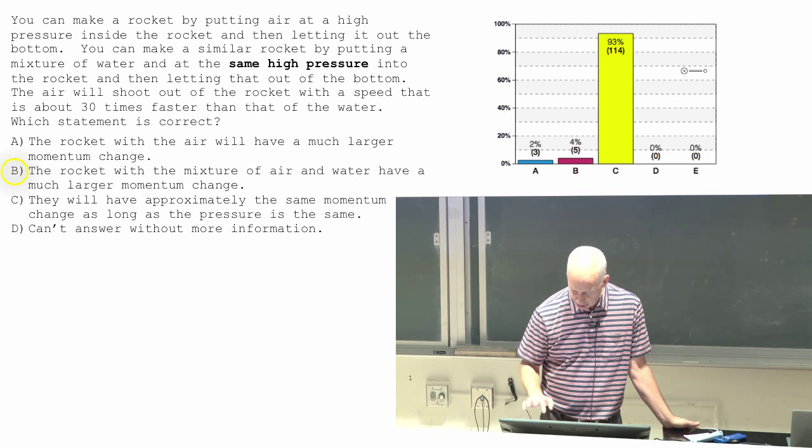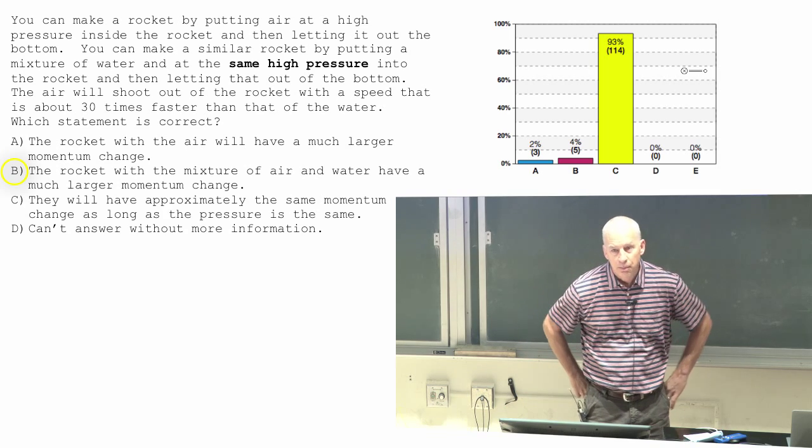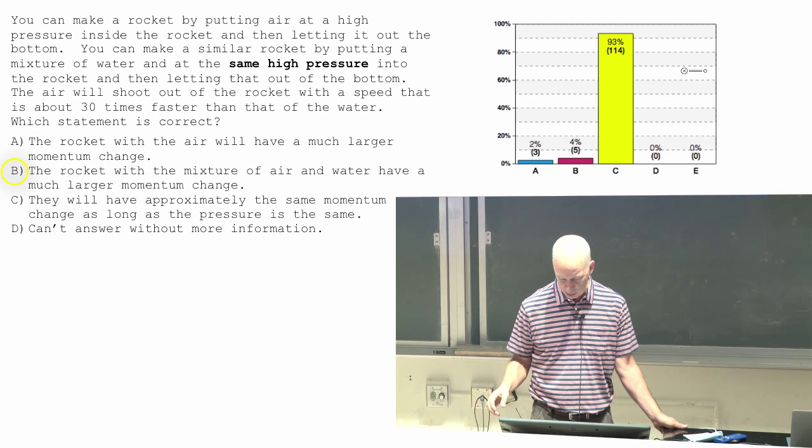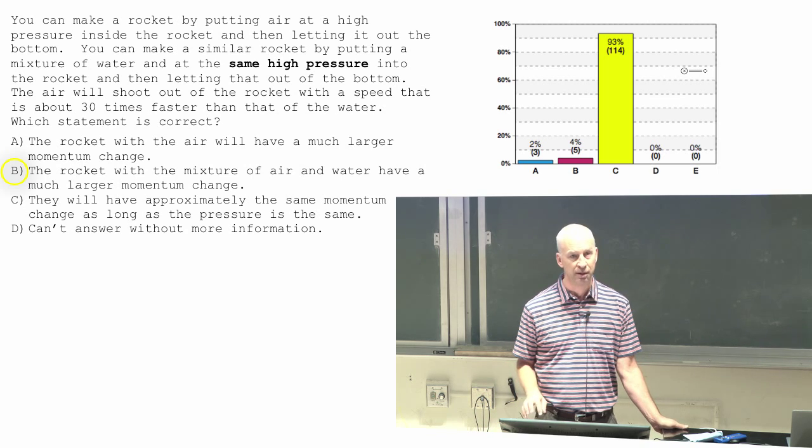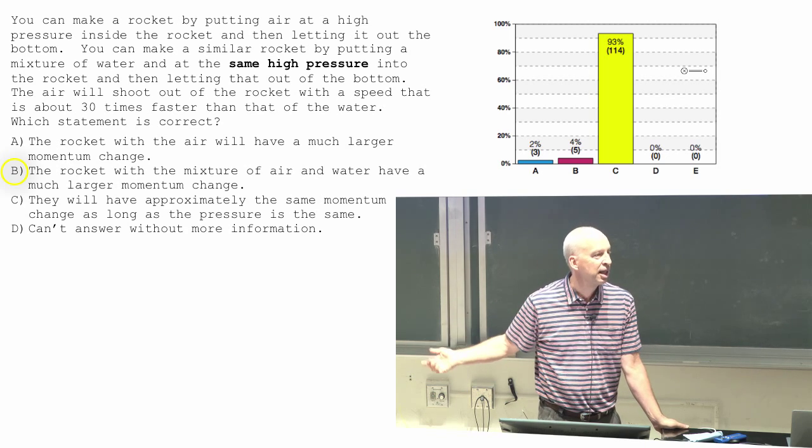Bigger momentum change by the other object gives you a bigger momentum change by the rocket. So bigger momentum change by the water gives you a bigger momentum change by the rocket. That is why they make water rockets.